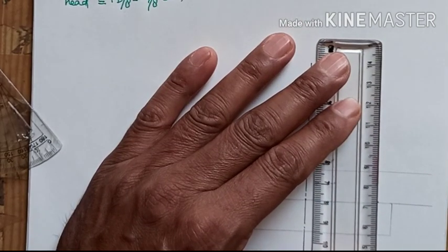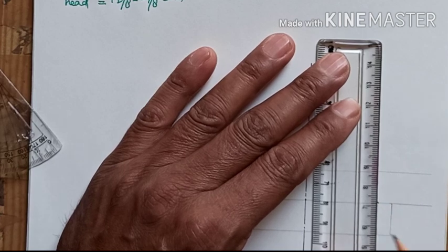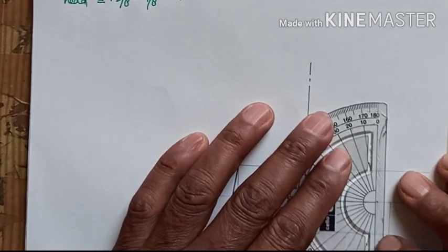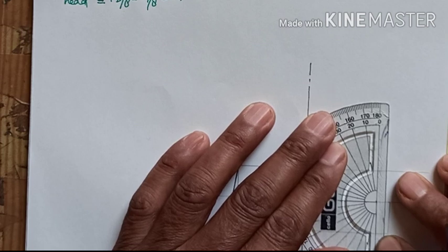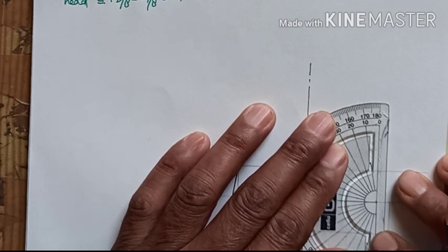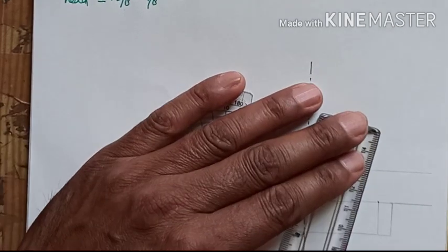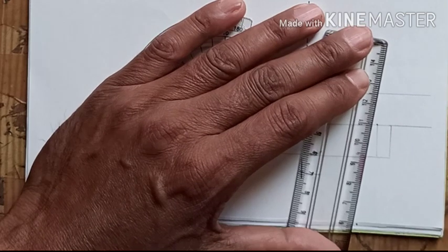First we have to draw a straight line. Then we can keep a protractor there and mark the 10 degrees angle, which is the angle of calculus. And again join the two points with help of a scale.